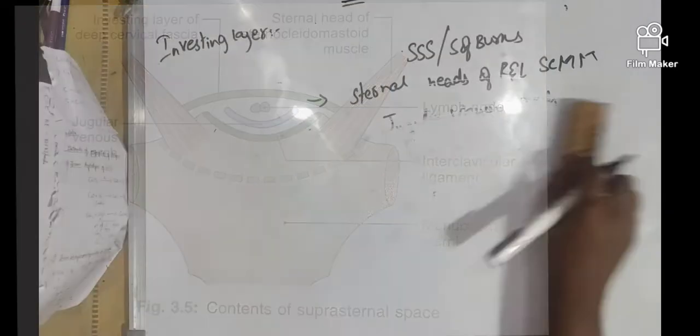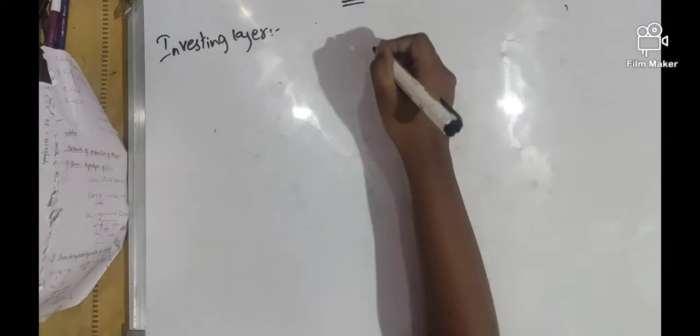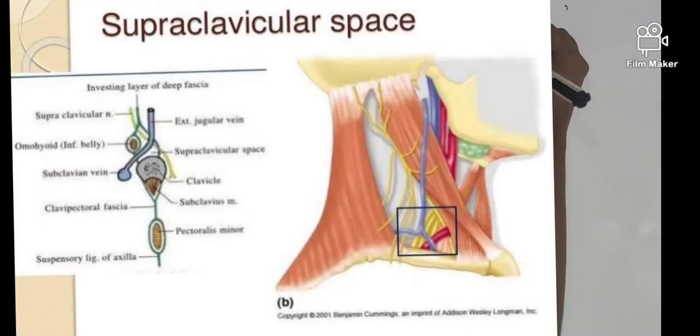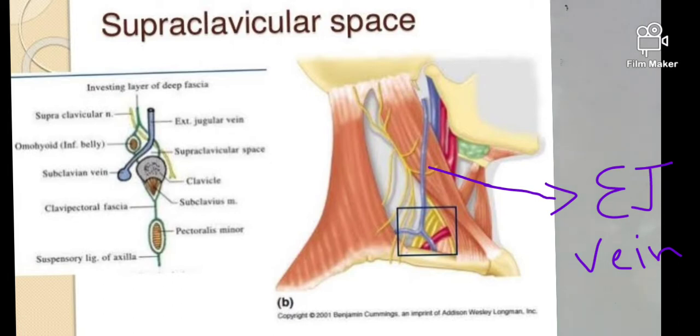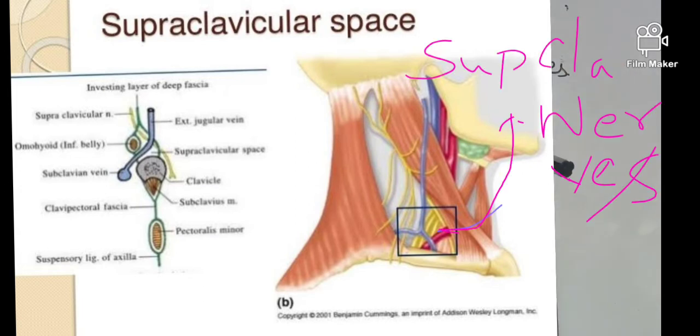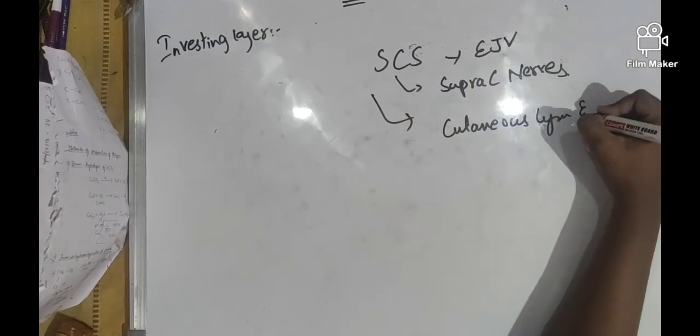In supraclavicular space we have external jugular vein and supraclavicular muscles, anterior and middle scalene muscles, and lymphatic vessels.